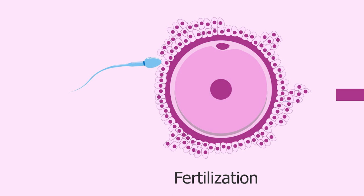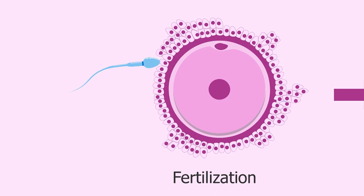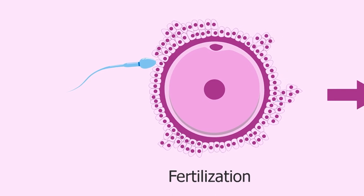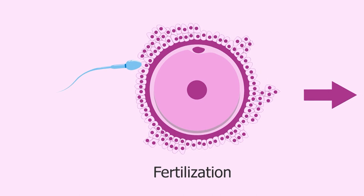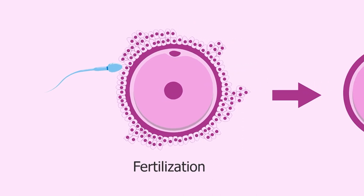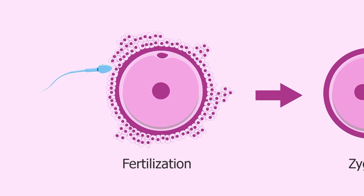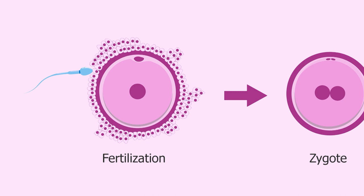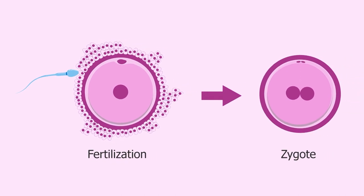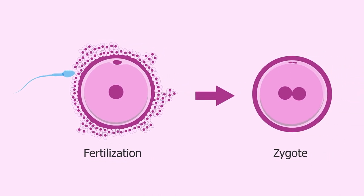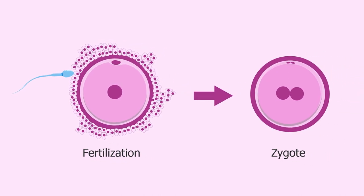Fertilization takes place when the spermatozoon has successfully entered the ovum and the two sets of genetic material carried by both the gametes fuse together, resulting in a zygote — that is, a single diploid cell.